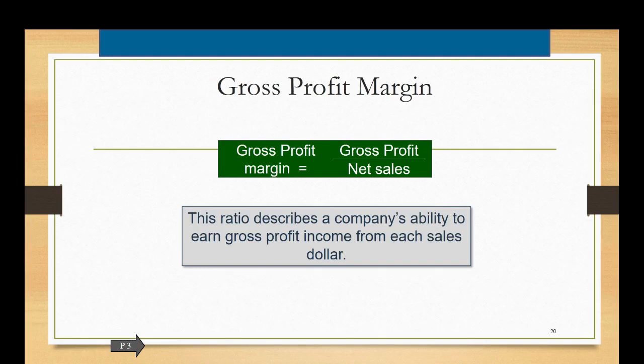A couple of profitability ratios are also thrown in here. One is the gross profit margin which is computed as the gross profit divided by net sales. Again both of these amounts will be found on your income statement so this ratio should be readily calculated and this one will tell you how much a company earned in gross profit from each sales dollar.